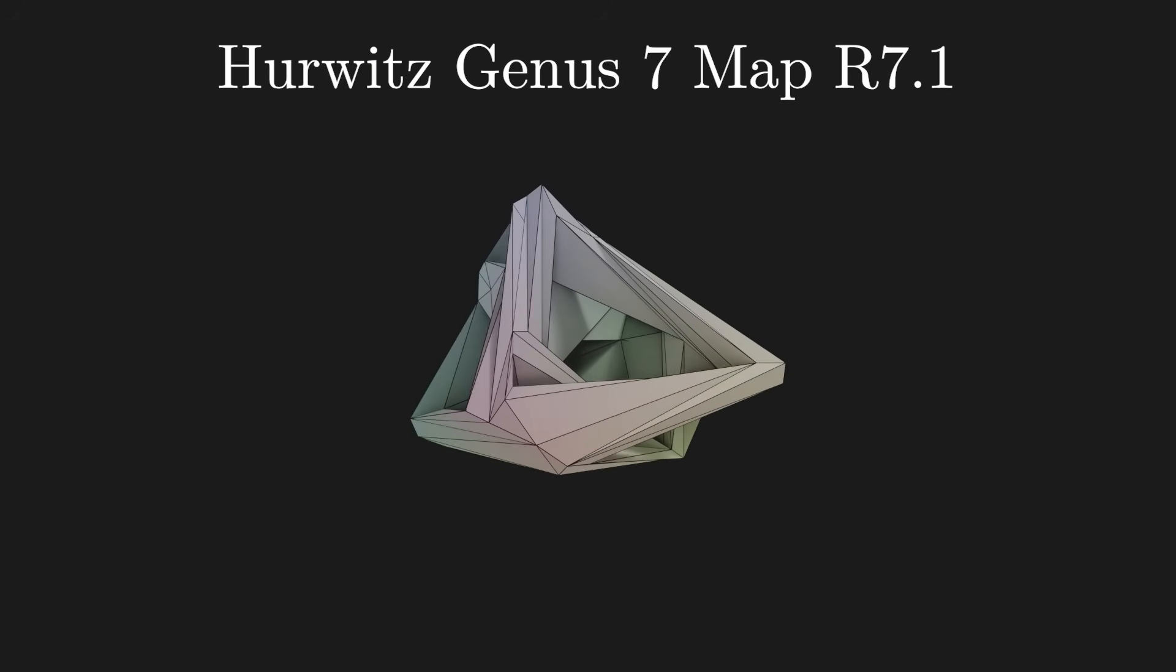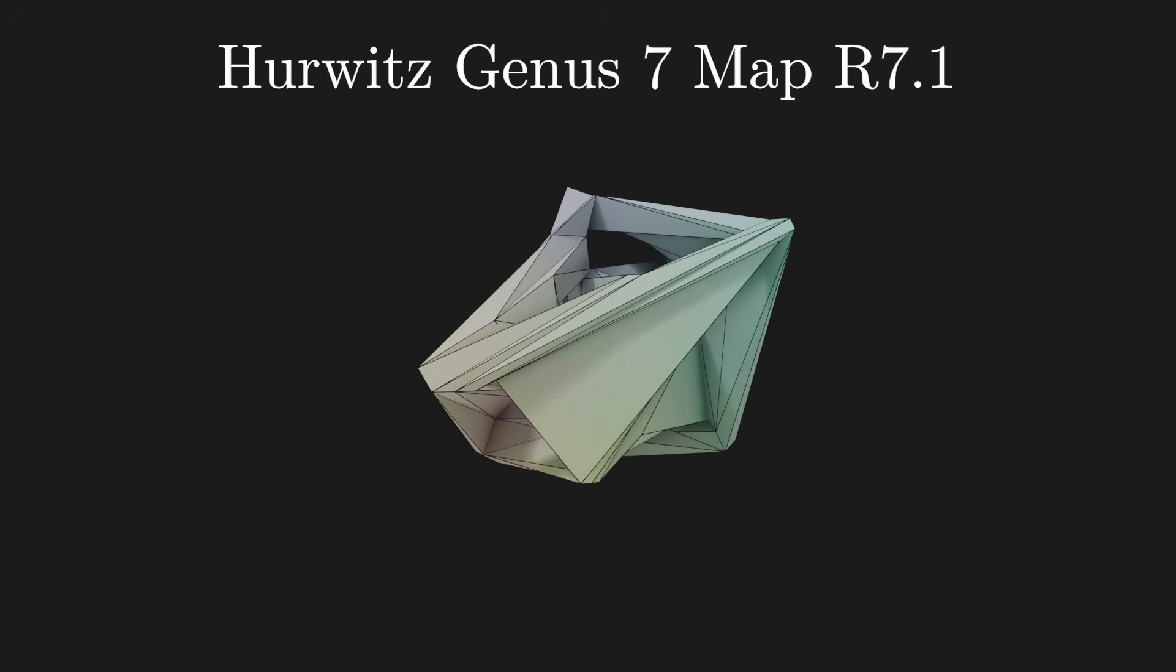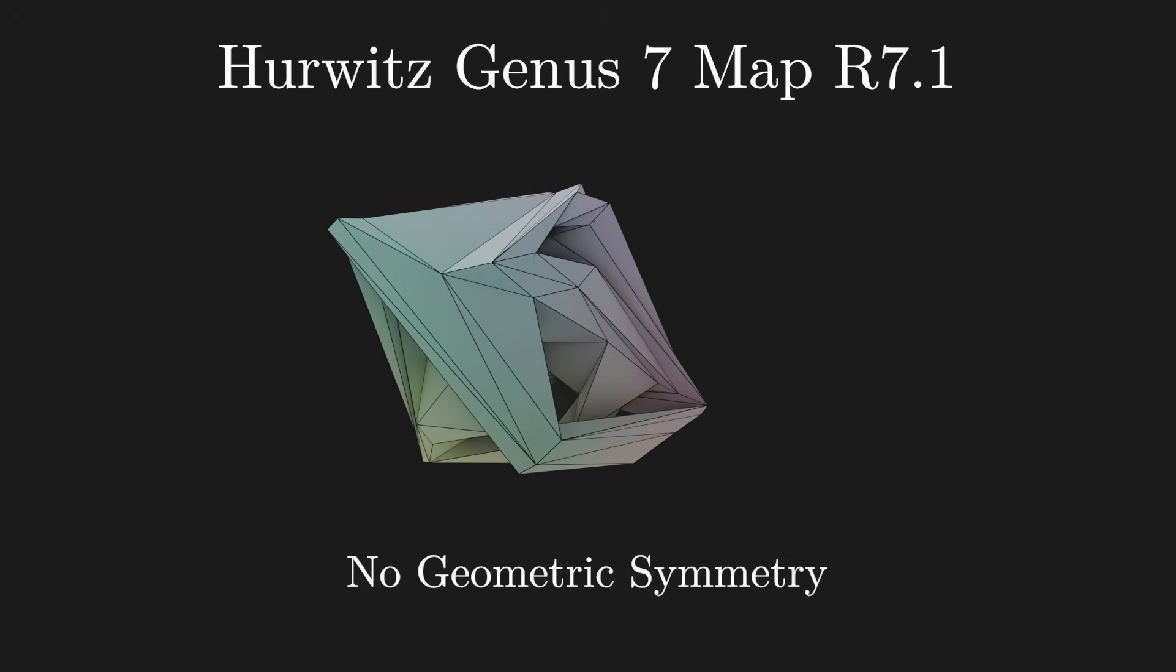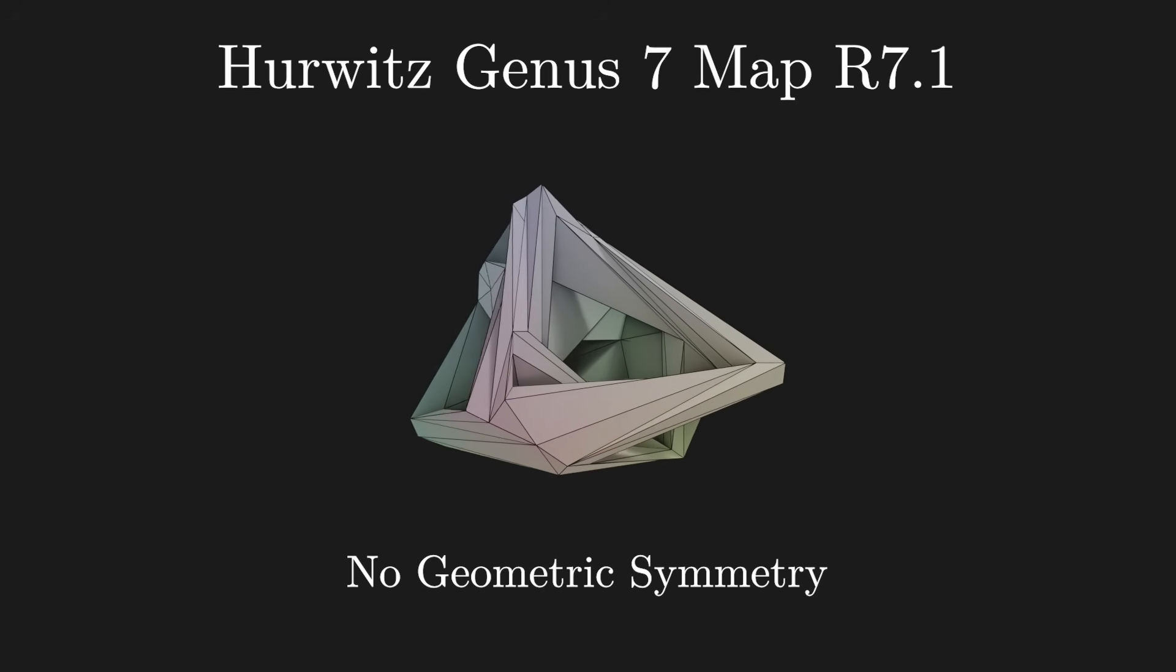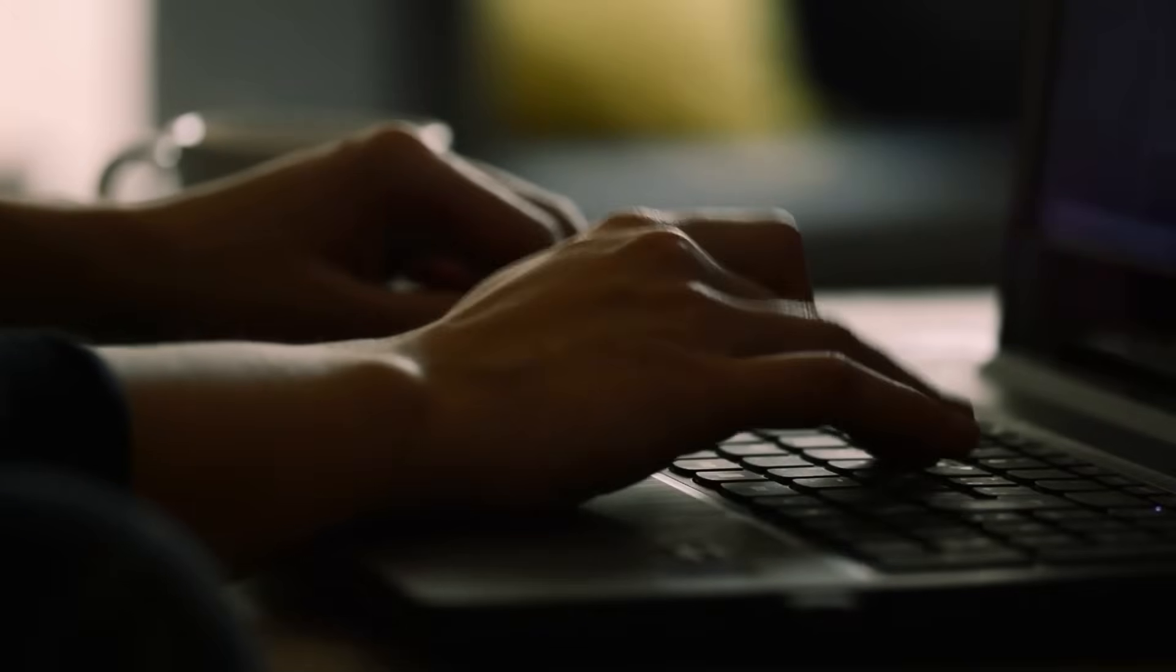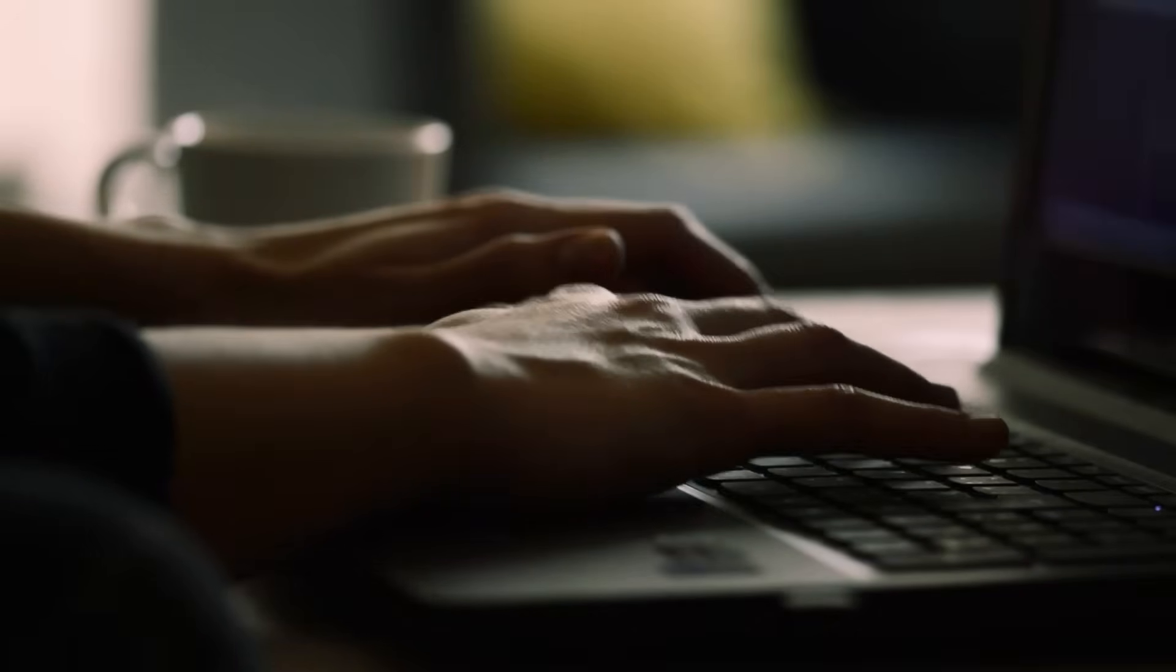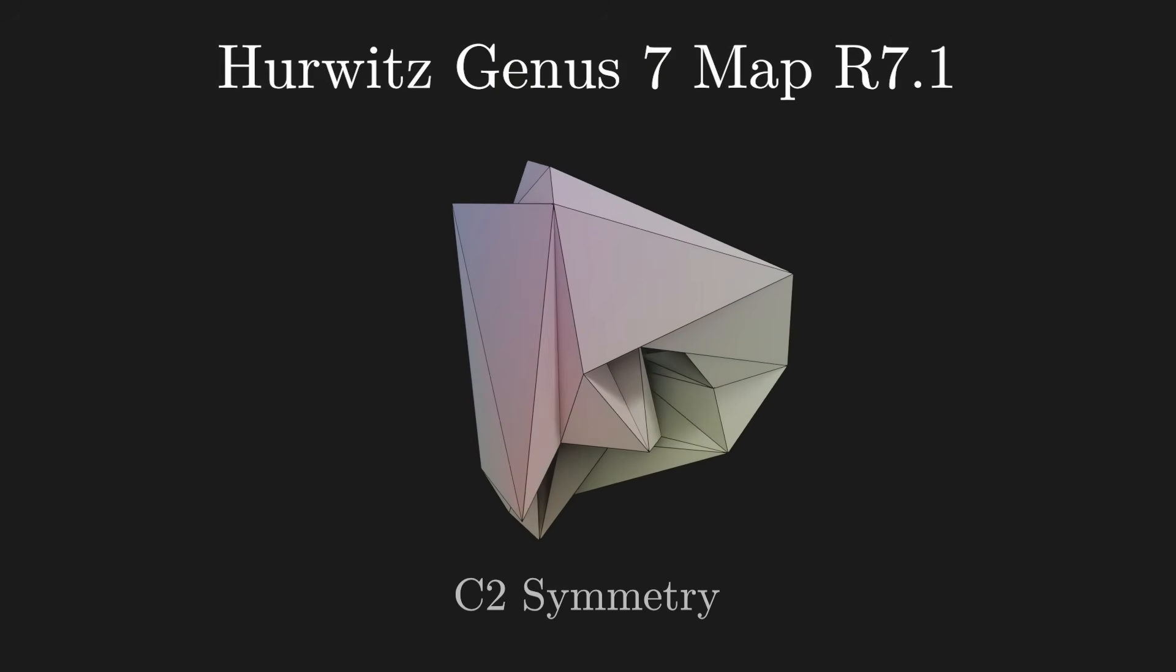In 2017, he found an embedding for the Genus 7 Hurwitz map, or McBeath surface. But it didn't have any geometric symmetries, so he wanted to know if my method could find a symmetric embedding. Well, with only a few changes to my code from before, I gave my solver the new map, and in a few hours, I found this embedding with C2 symmetry.